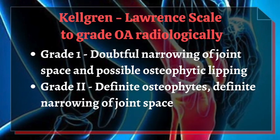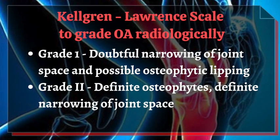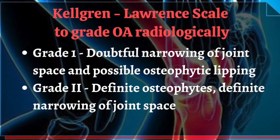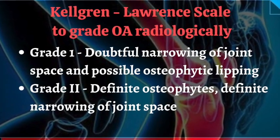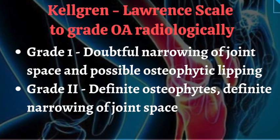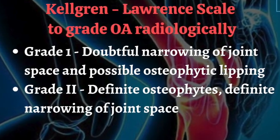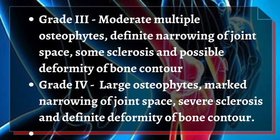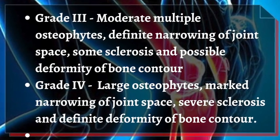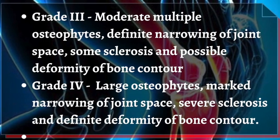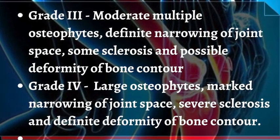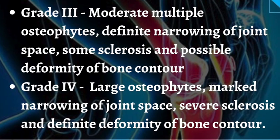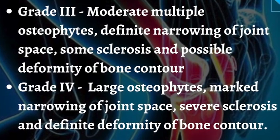Here is the Kellgren and Lawrence scale to grade osteoarthritis radiologically. Grade 1 is doubtful narrowing of joint space and possible osteophytic lipping. Grade 2 is definite osteophytes and definite narrowing of joint space. Grade 3 is moderate multiple osteophytes, definite narrowing, some sclerosis, and possible deformity of bony contour. Grade 4 is large osteophytes, marked narrowing, severe sclerosis, and definite deformity of bony contour.